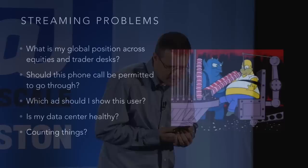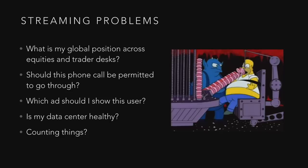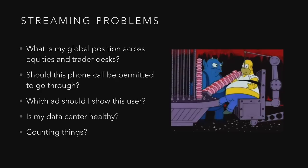Back to streaming problems. What is my global position across equities, trader desks, algorithms, and days of the week? We see a lot of: should this phone call be permitted to go through? Do I have the right permission? Have I paid my bill? Is it a real number, a number in a country I'm allowed to call? What ad should I show this user? Is my data center healthy? I want to consume log information and get alerting without stringing together nine systems. Counting things is apparently the canonical example everyone uses for streaming systems.